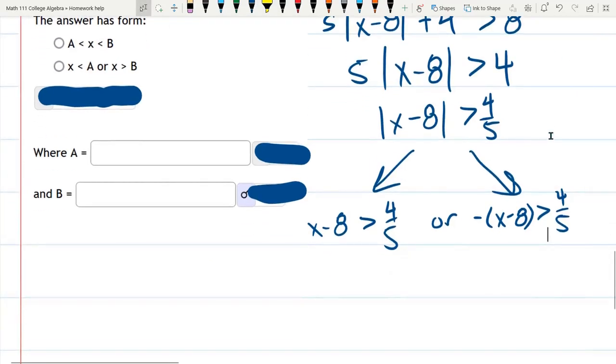And we'll keep solving this. It is important that you put the plus minus on the absolute value side. You don't put it on the other side because it will mess up your inequality. First thing I'm going to do is get rid of this negative. And the way I'm going to do it is multiply by negative 1. So I have x minus 8 is less than, it flips the inequality, negative 4 fifths.